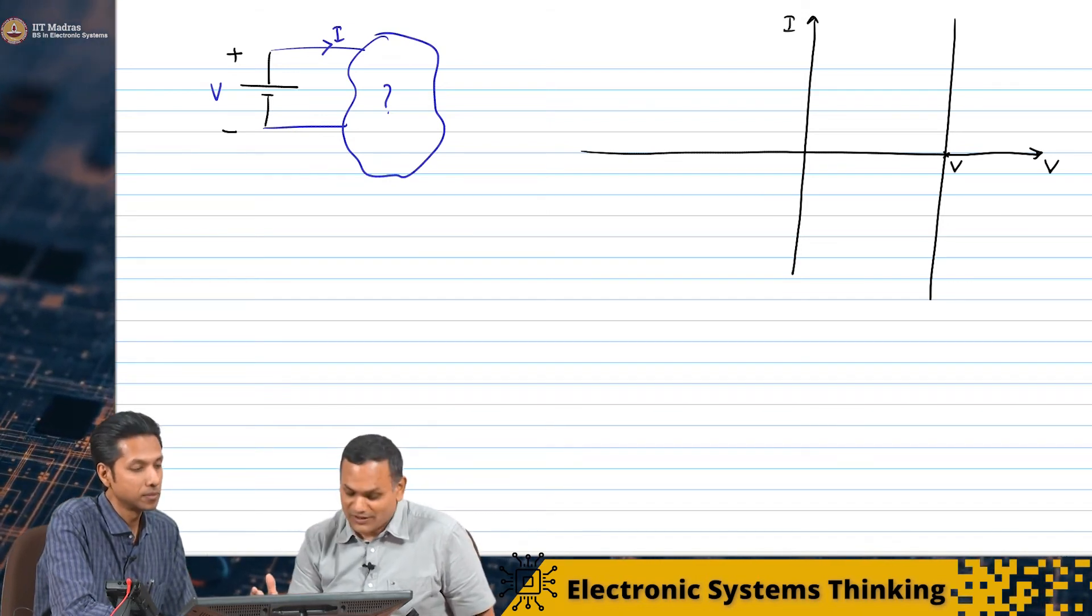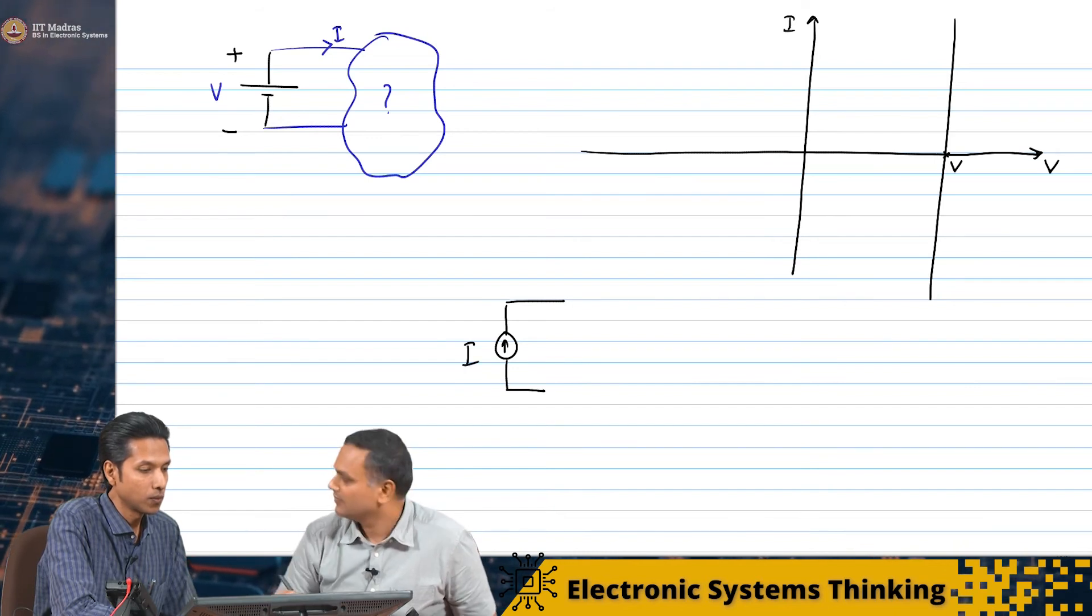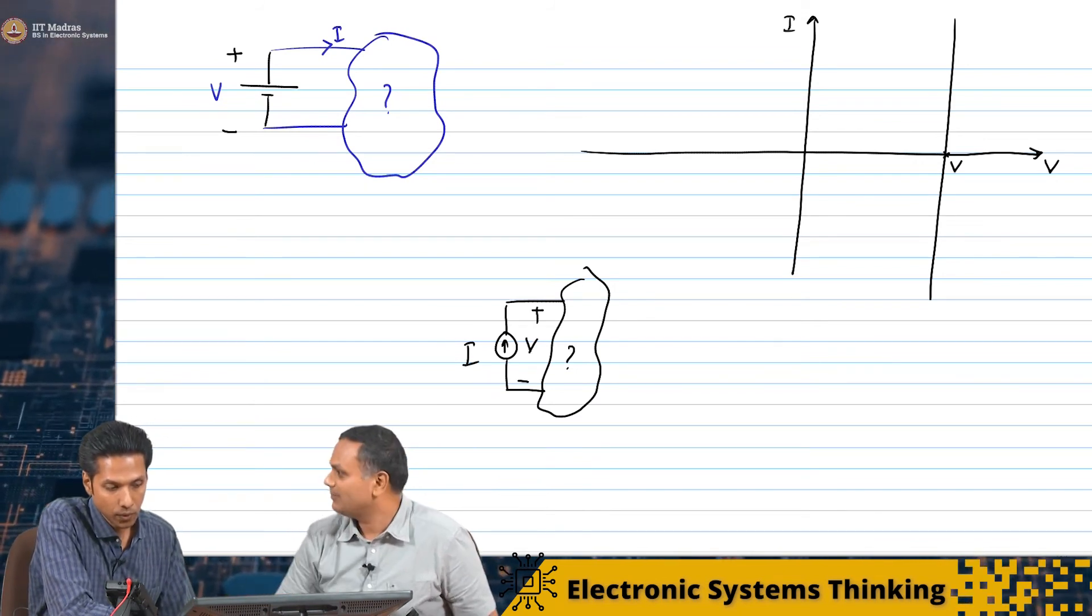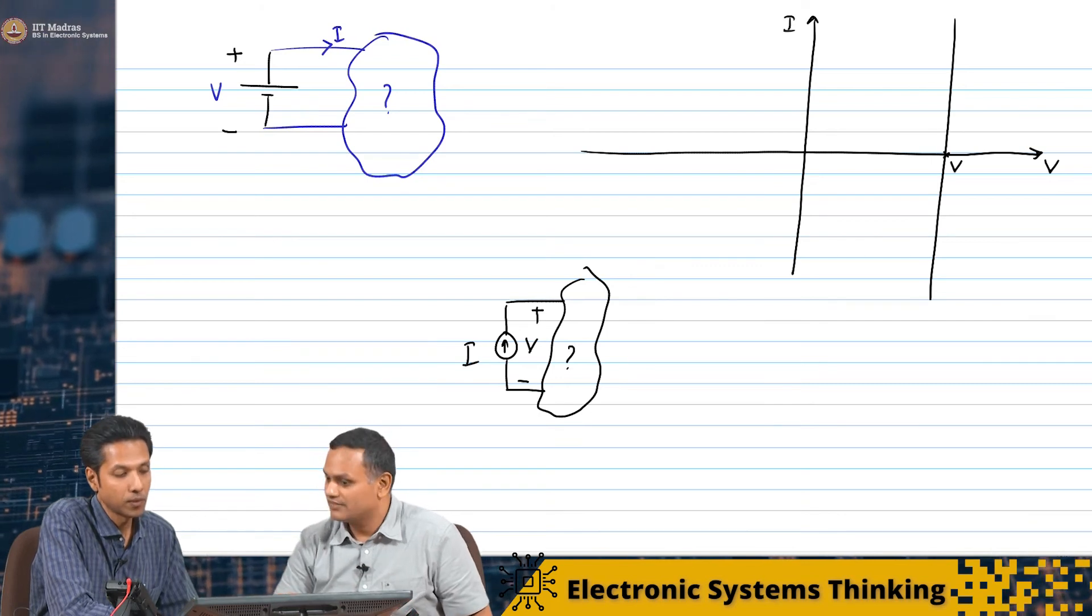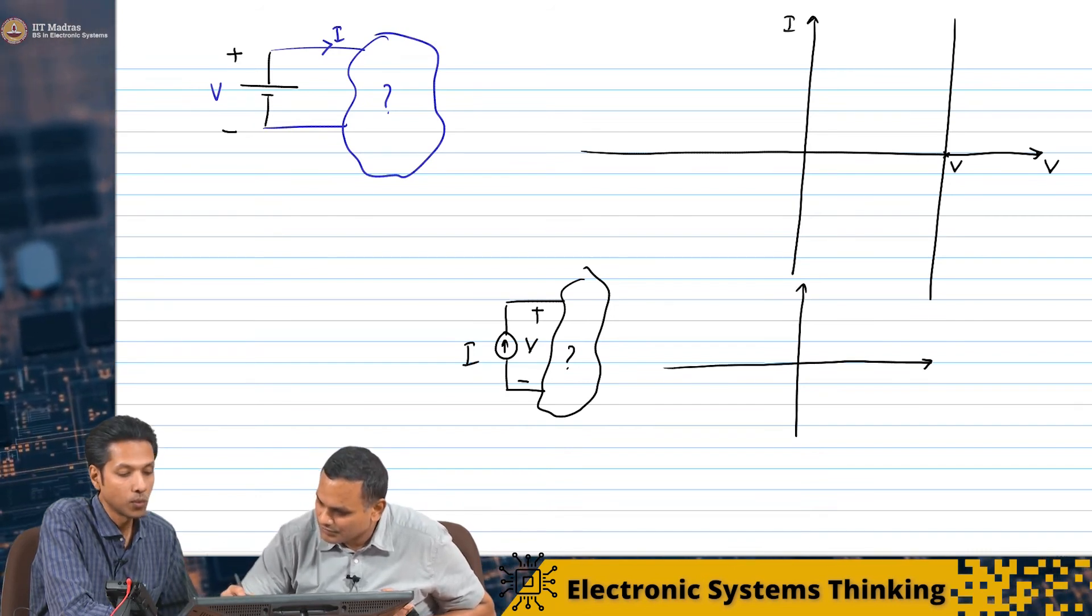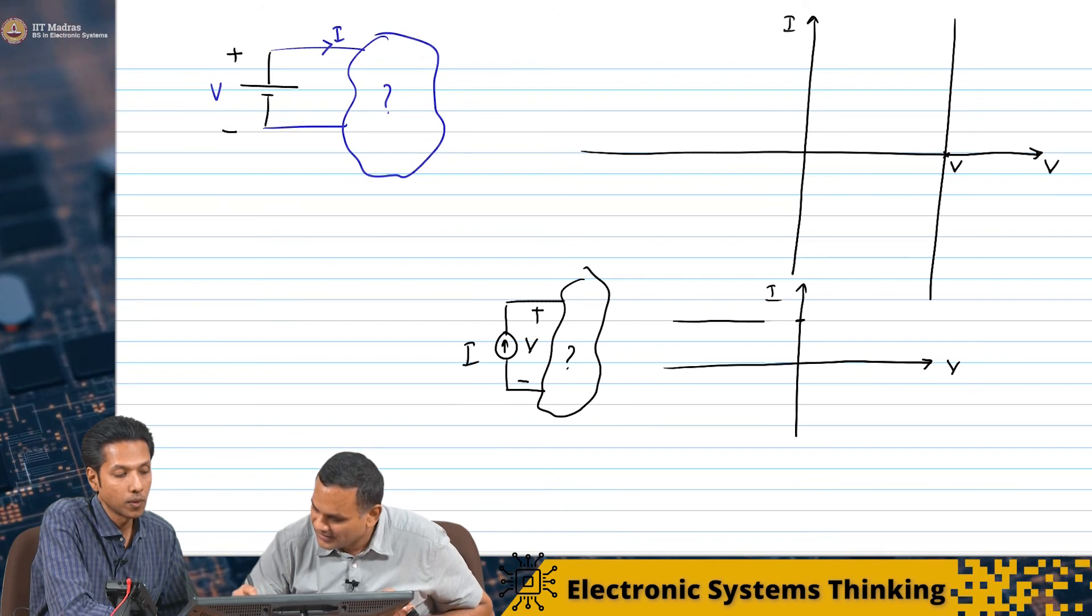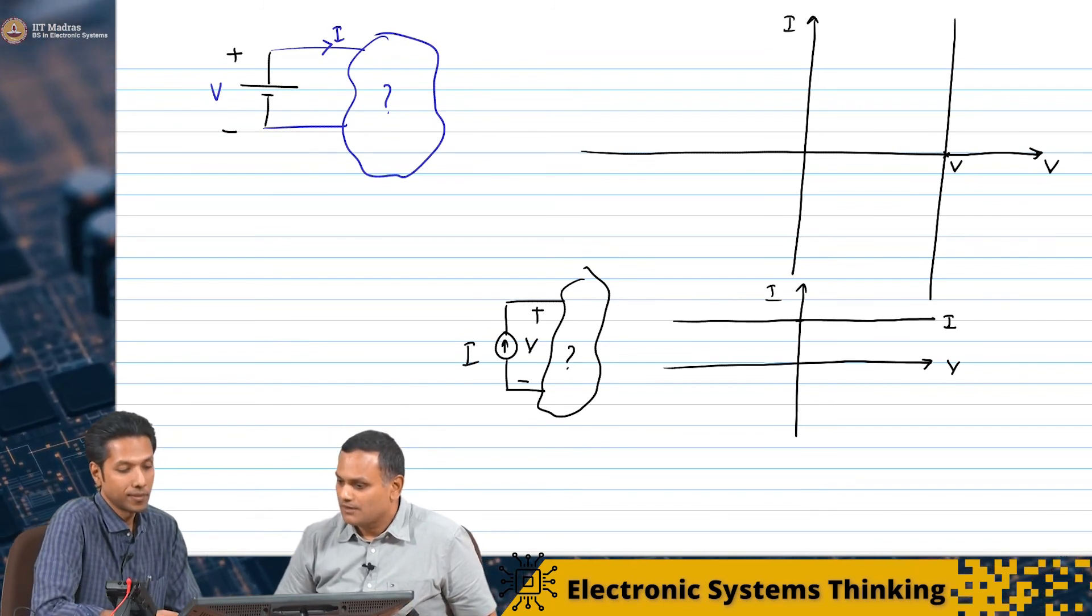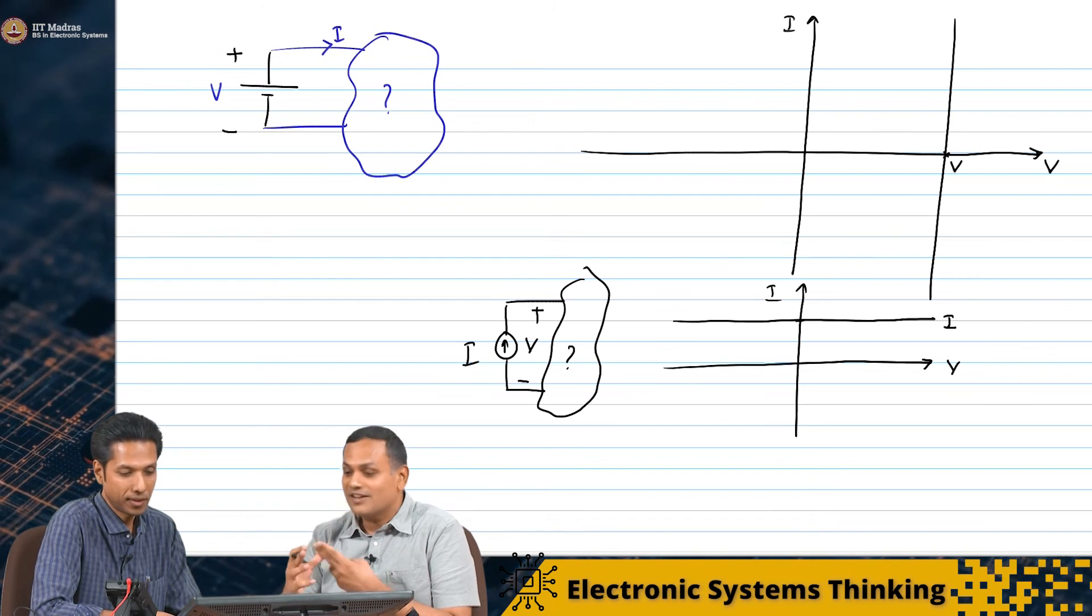Similarly, I can do the same thing for a current source. For a current source I, it doesn't matter what I connect here, but there is some potential difference that is developed here. I keep changing what this thing is - it could be a resistance - I find out what this V is. If I plot the IV characteristics of that, I will get a straight line parallel to the x-axis whose value is just the value of the current source. We now have a good visual representation of voltage source, current source, and resistance.